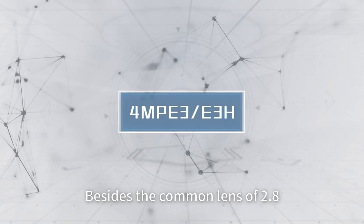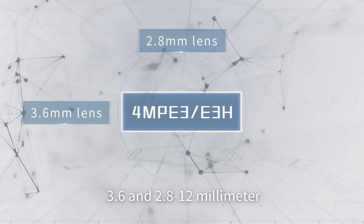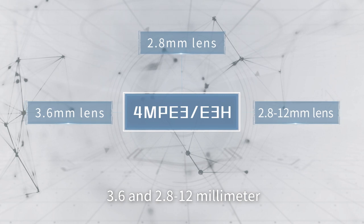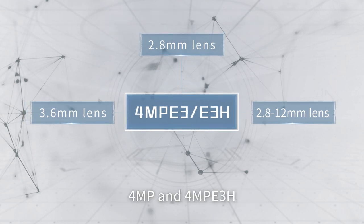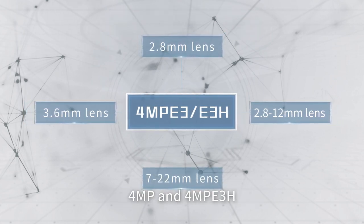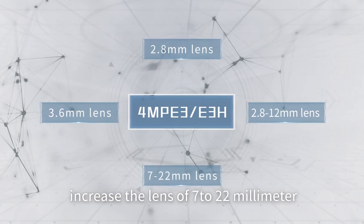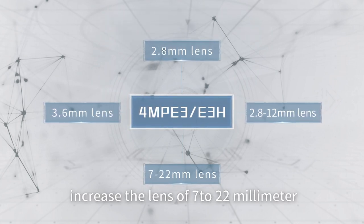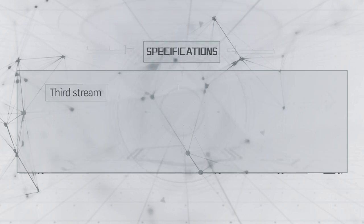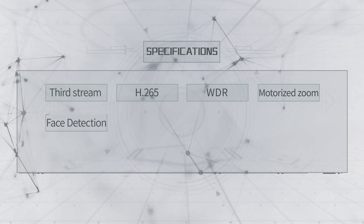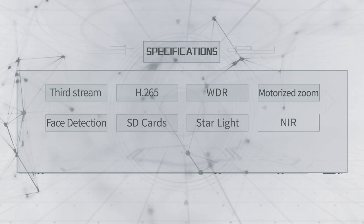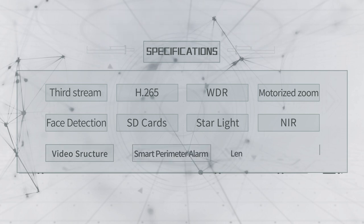Besides the common focal lengths of 2.8mm, 3.6mm and 2.8–12mm, 4MP E3 and E3H also offer 7–22mm. Moreover, features supported include Swiss DIN, H.265 smart codec, WDR, motorized zoom, face detection, video structure, smart perimeter alarm, SD card, NIR, starlight and lens distortion correction.